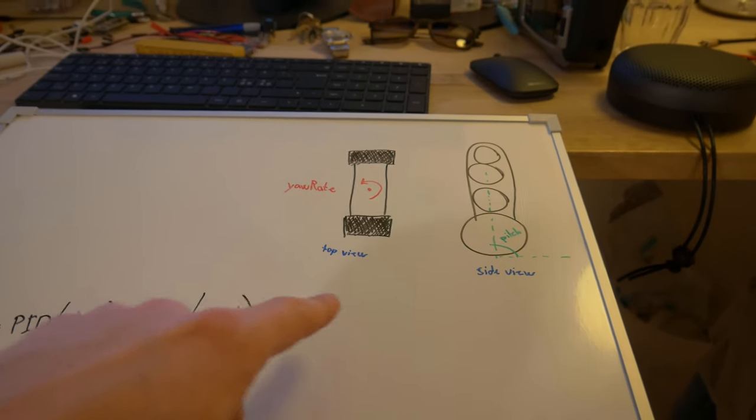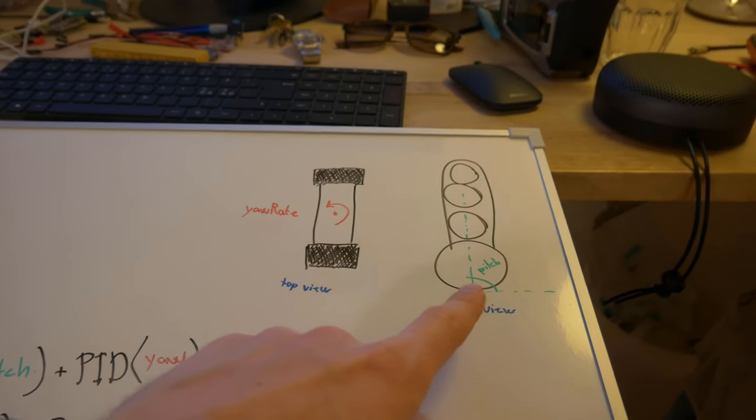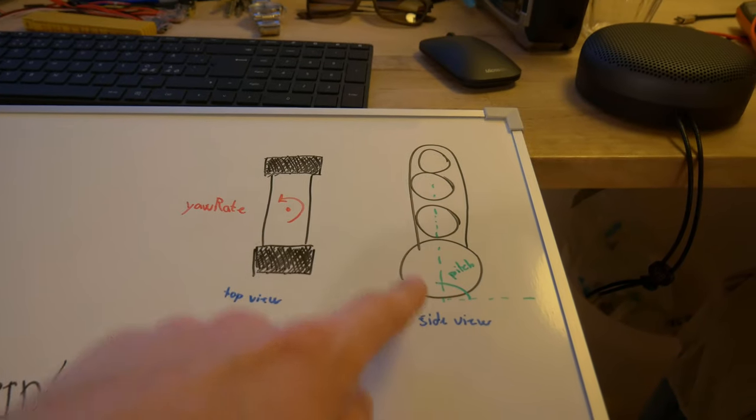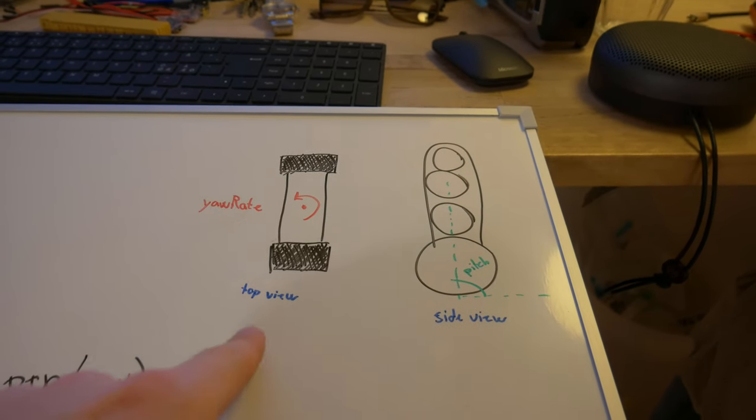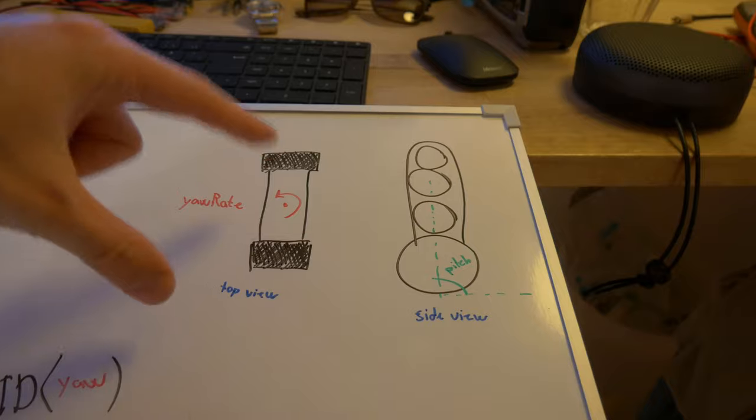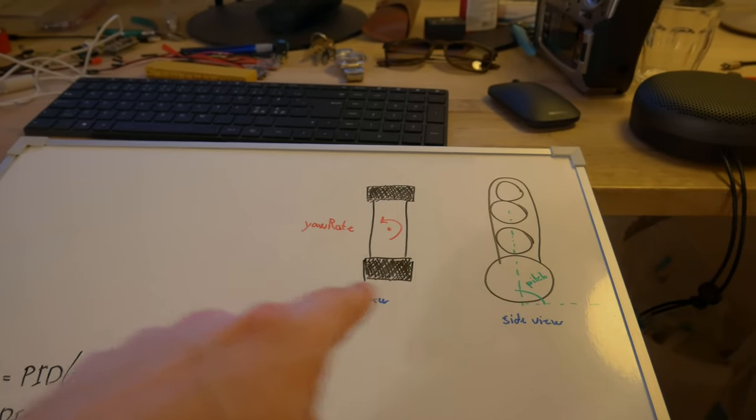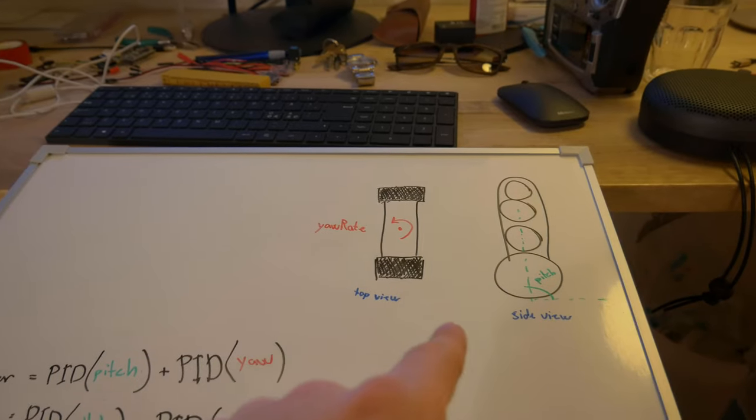I want to control both the yaw rate and the pitch angle of the vehicle. You can see from the side view, this is where the pitch angle is. And from the top view, this is how the yaw is going to work. I need to control both of these things simultaneously.